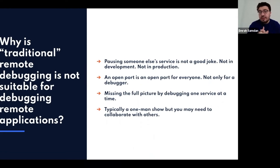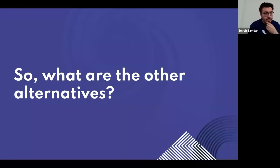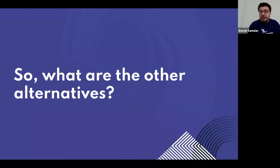Remote debugging is really a one-man show — you're sitting as a developer, looking at the sequence, debugging one side at a time, alone. It's not something easily recordable unless you're recording it, and you are not able to collaborate with colleagues. So both local debugging and remote debugging have serious problems. What are we going to do to debug our distributed applications?